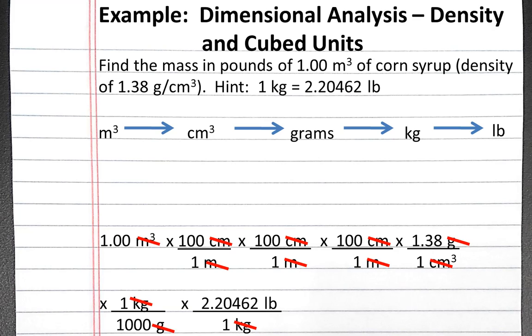If we multiply these numbers out in our calculator, we should come up with the answer 3.04 times 10 to the 3rd pounds.